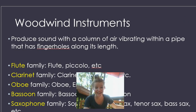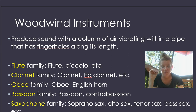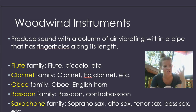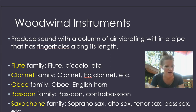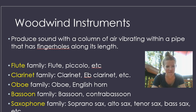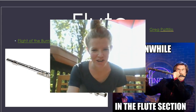Moving on from string instruments, we have woodwind instruments. Woodwind instruments are kind of my favorite because I play the flute. What's going to vibrate is your air — whenever you're blowing, your air is vibrating and that is causing a sound. We typically have finger holes or keys that change the notes. Our typical woodwind instruments are flute, clarinet, oboe, bassoon, and sometimes saxophone. Let's start with the flute — one of the best instruments ever.